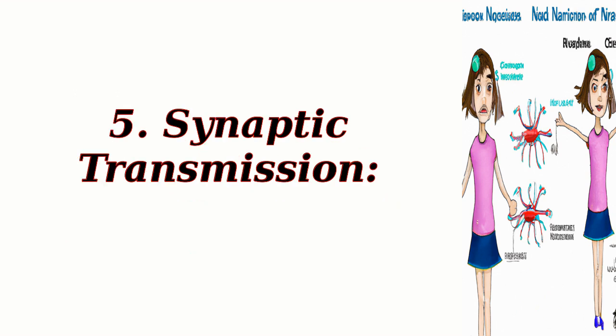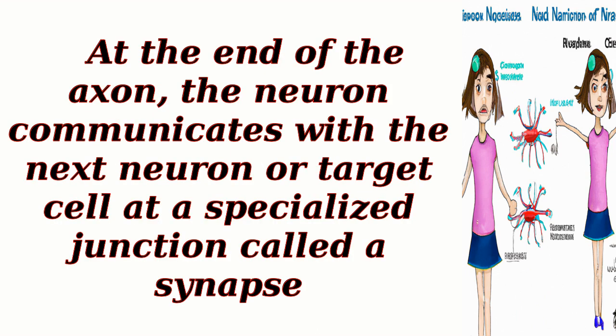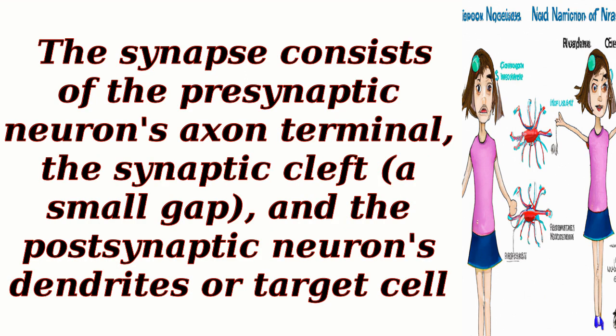Synaptic transmission: At the end of the axon, the neuron communicates with the next neuron or target cell at a specialized junction called a synapse. The synapse consists of the presynaptic neuron's axon terminal, the synaptic cleft (a small gap), and the postsynaptic neuron's dendrites or target cell.